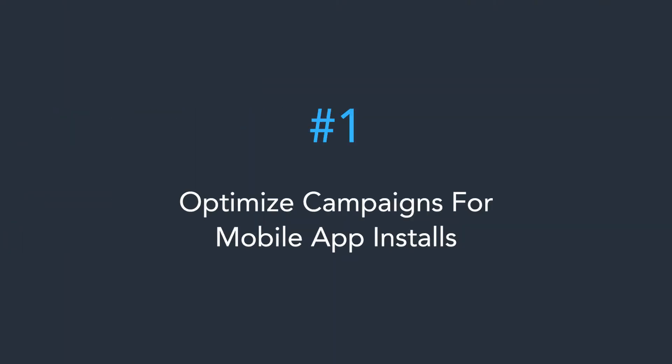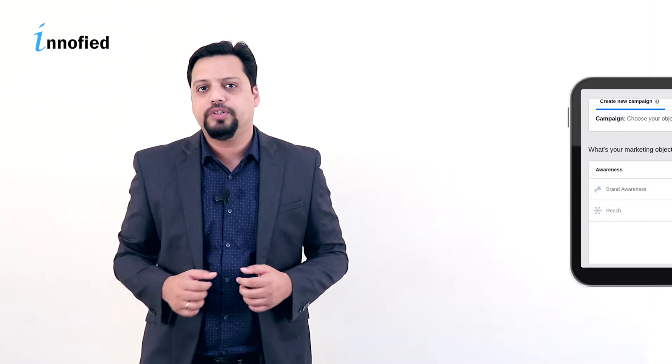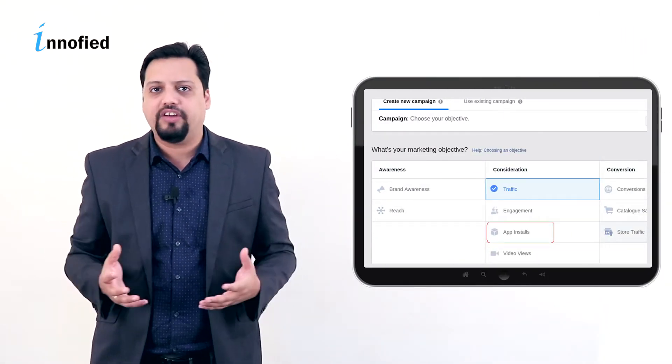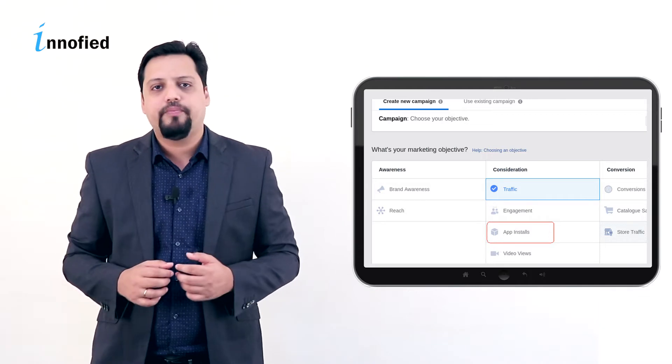Strategy number 1 is to optimize campaigns for mobile app installs. You can now easily optimize your campaign objective for more mobile app installs simply by going to manage ads section and choosing your app objective as app install. Here in this case, you can trust Facebook's algorithm for serving the ads to the users who are most likely to install your app. So go to the manage ads section and choose ad objective as app installs.